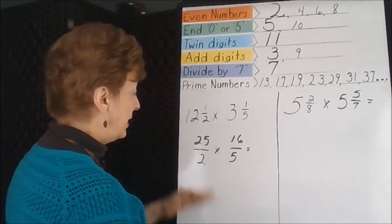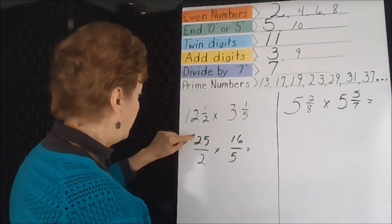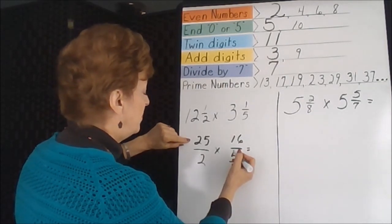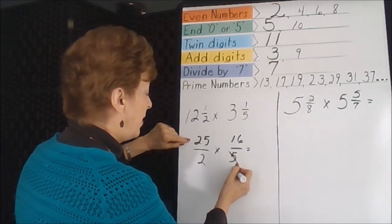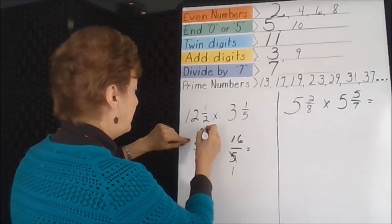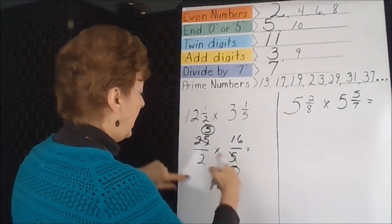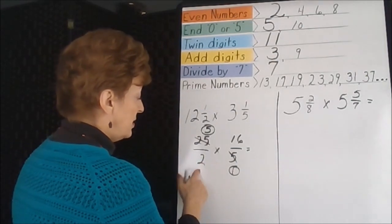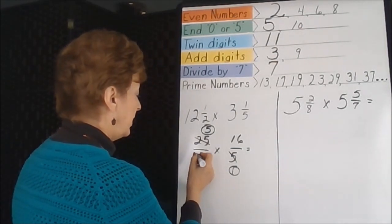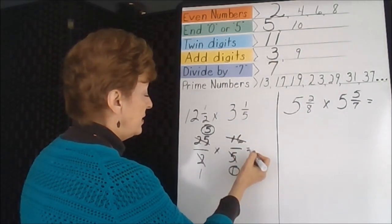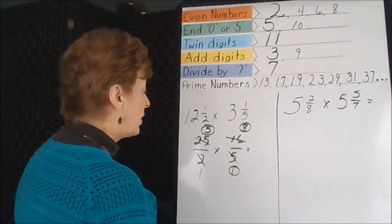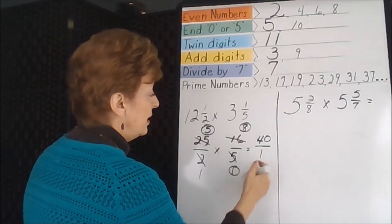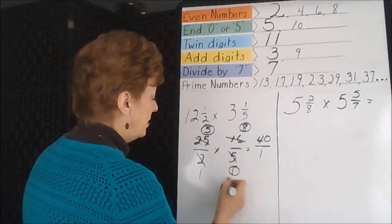Check the diagonals to see if we can simplify. Twenty-five and five both end in fives, so we can use five: five divides into five once, five divides into twenty-five five times. On the other diagonal, two and sixteen are both even numbers, so we use two: two divides into two once, two divides into sixteen eight times. Now multiply the numerators and denominators — the simplified fraction is forty.